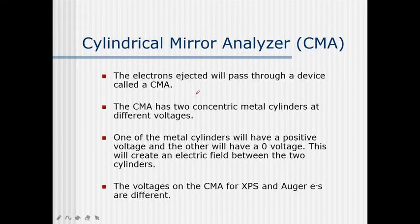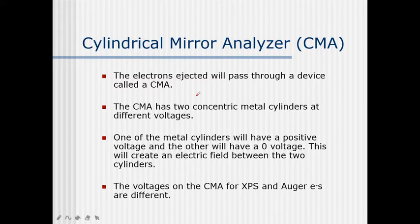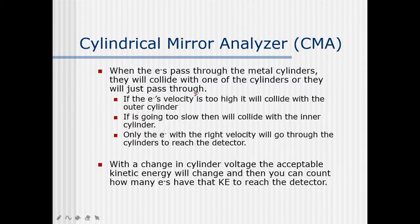One of the metal cylinders has a positive voltage and the other has zero voltage. This creates an electric field between the two cylinders. The voltages on the CMA for XPS and auger electrons are different — for auger electrons, the CMA deals with secondary electrons that are released. When electrons pass through the metal cylinders, they will either collide with one of the cylinders or pass through, which is decided by their velocity.